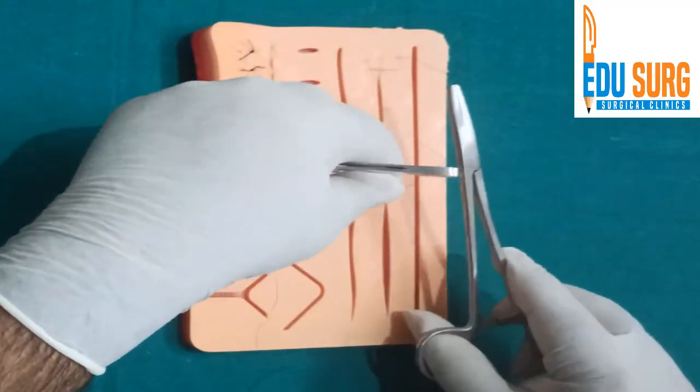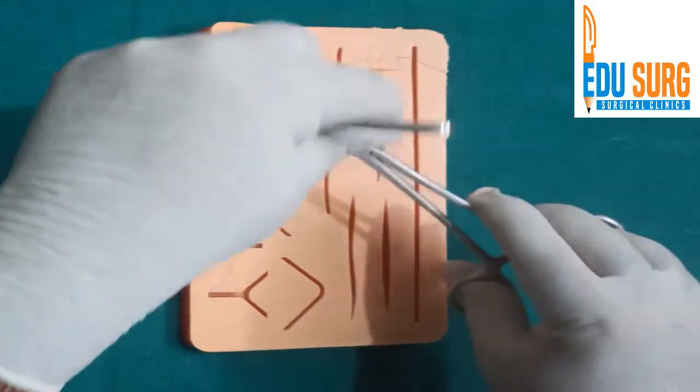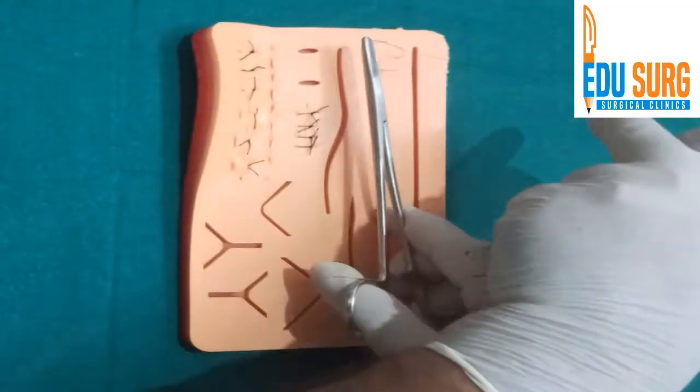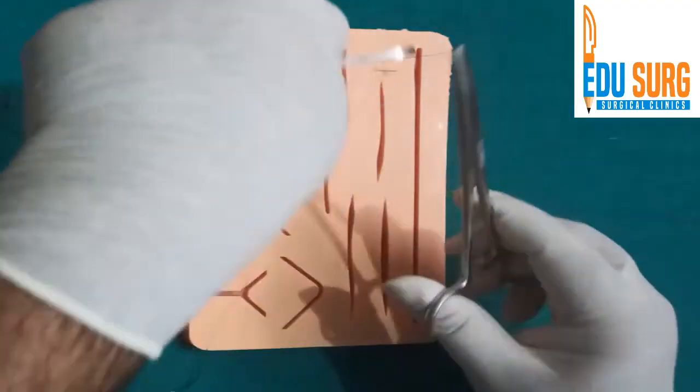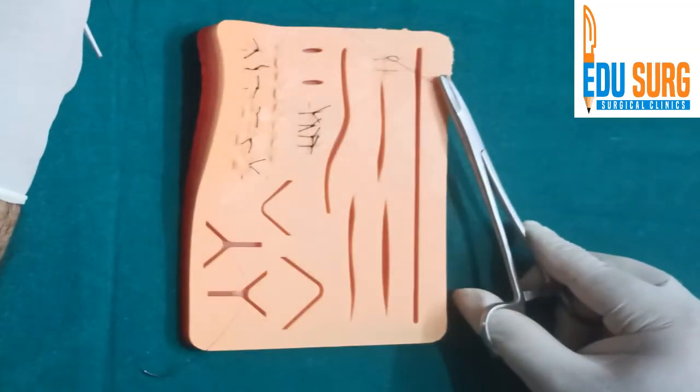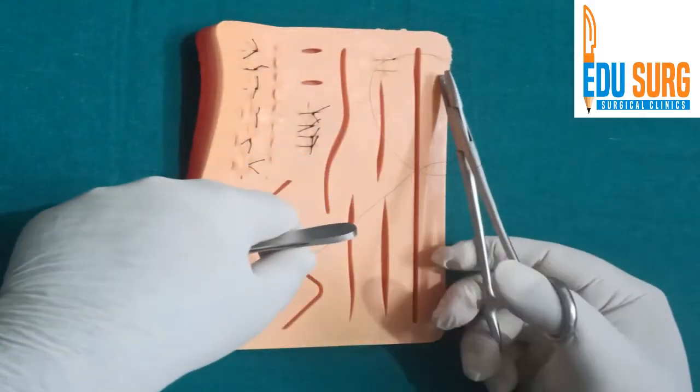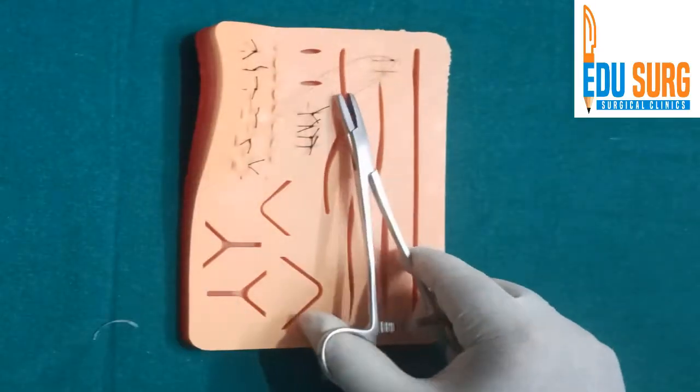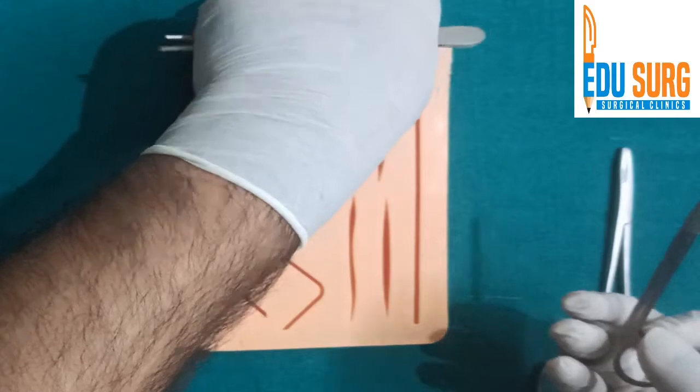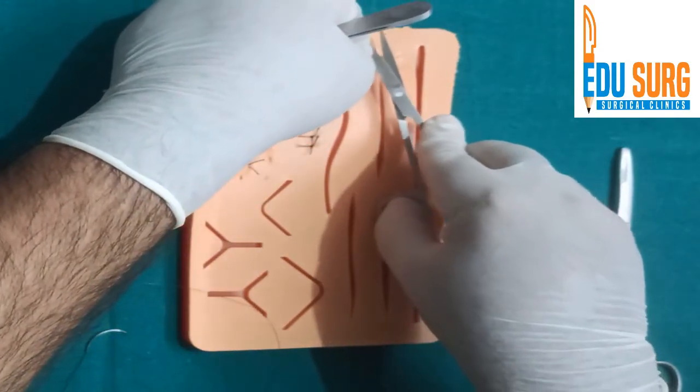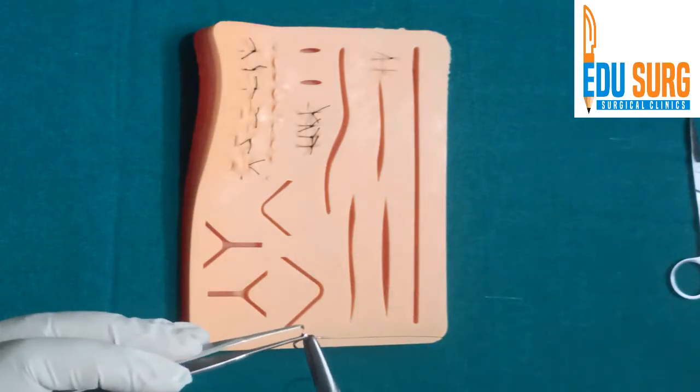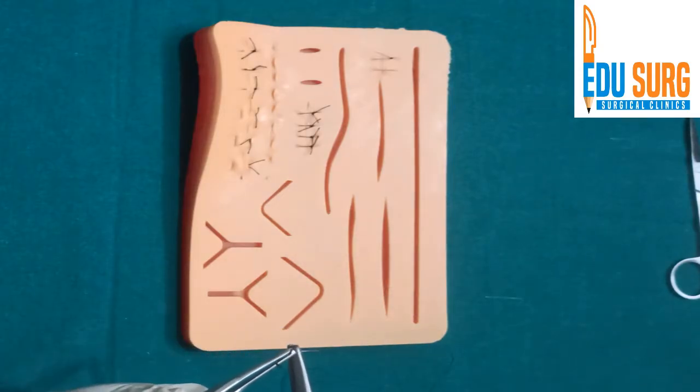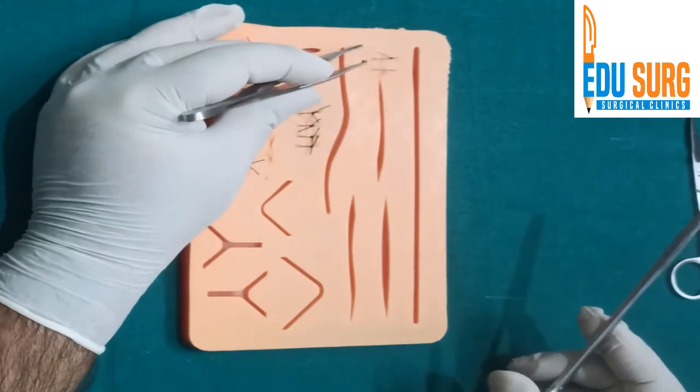So this is how a Connell is taken. Again, this is the C. So two rounds. Remember that Connell is on intestine, so you have to be very gentle. Always not on the side. You don't need to strangulate the bowel. And four knots. So this is how a Connell stitch at corners is taken.